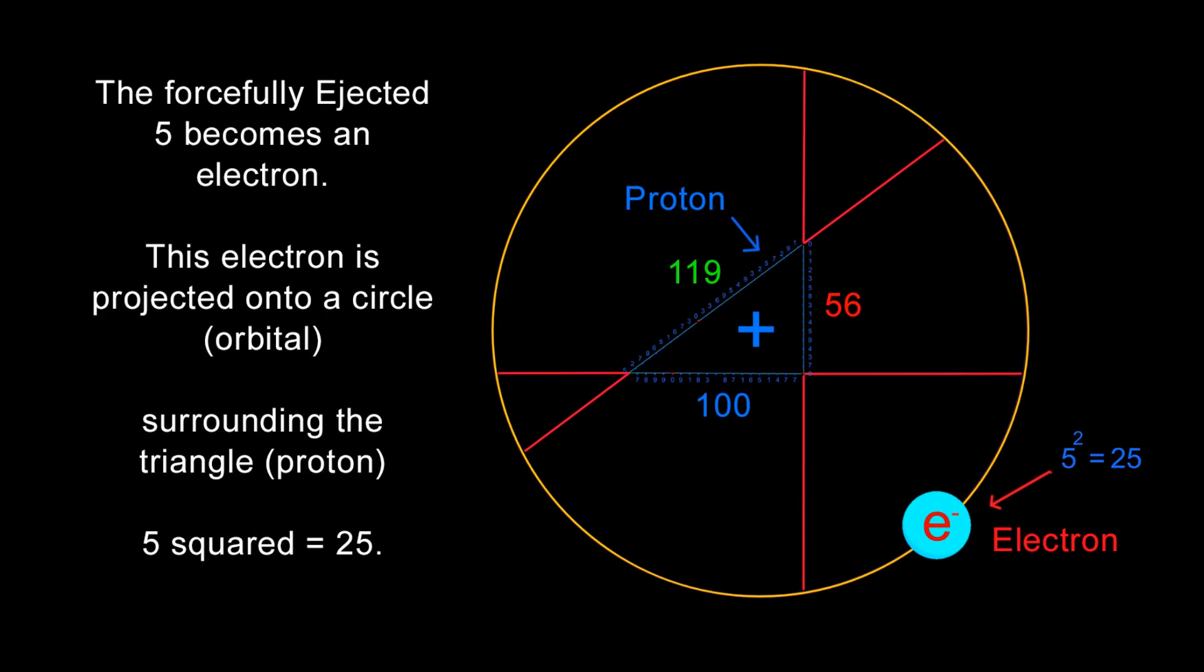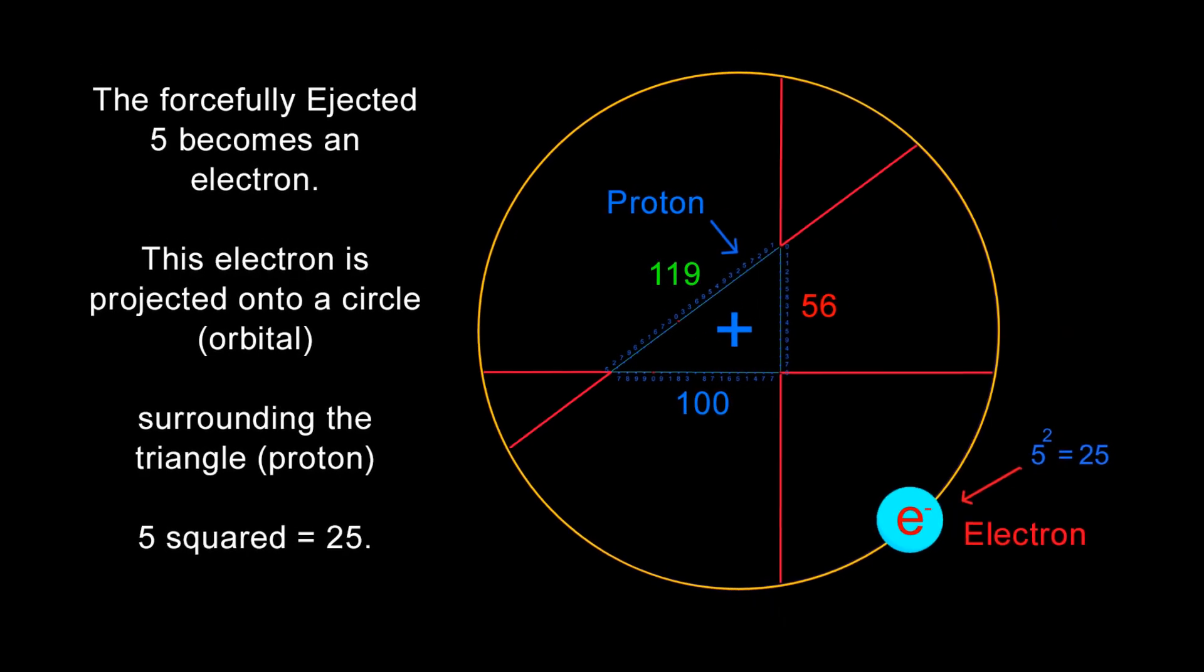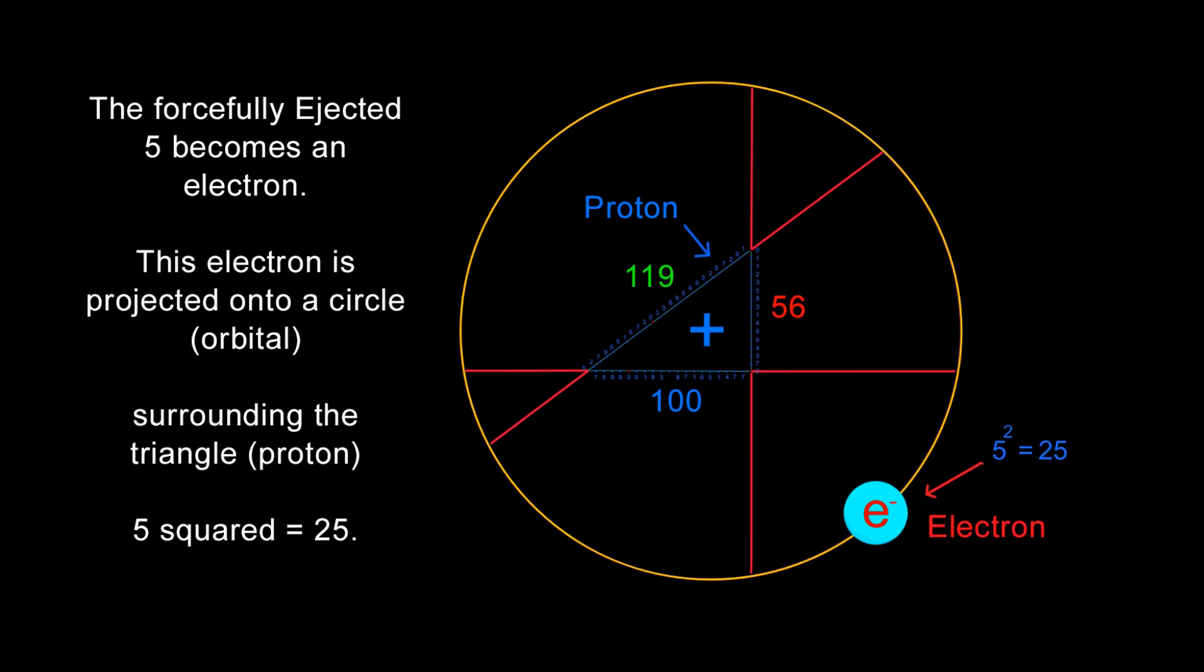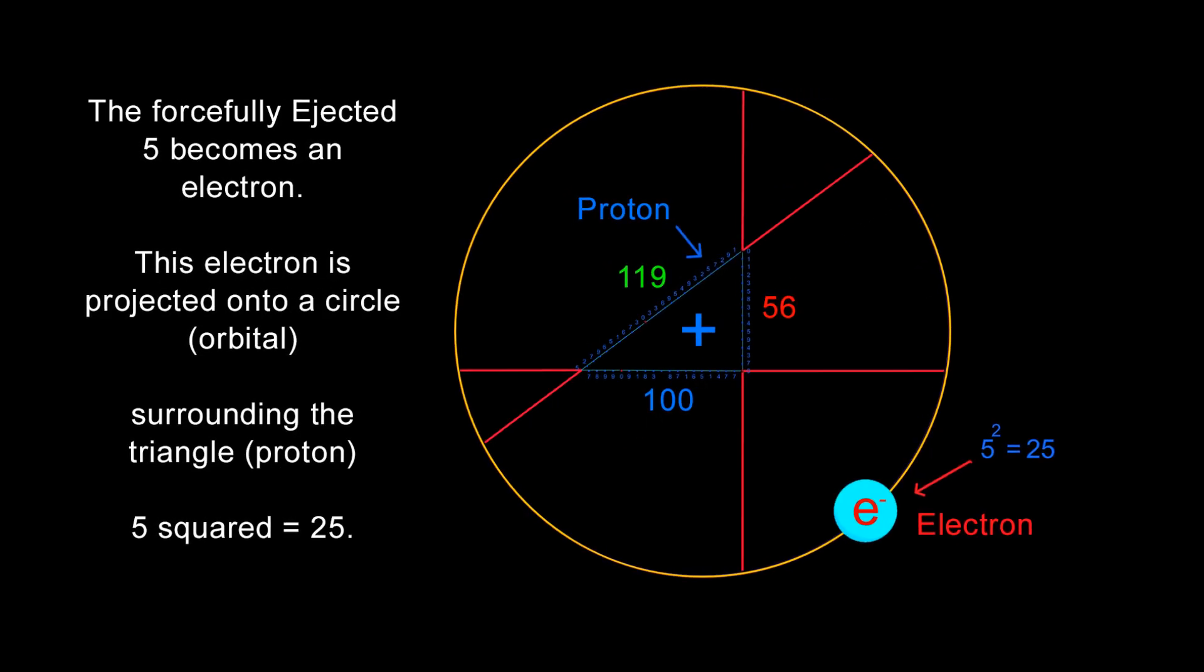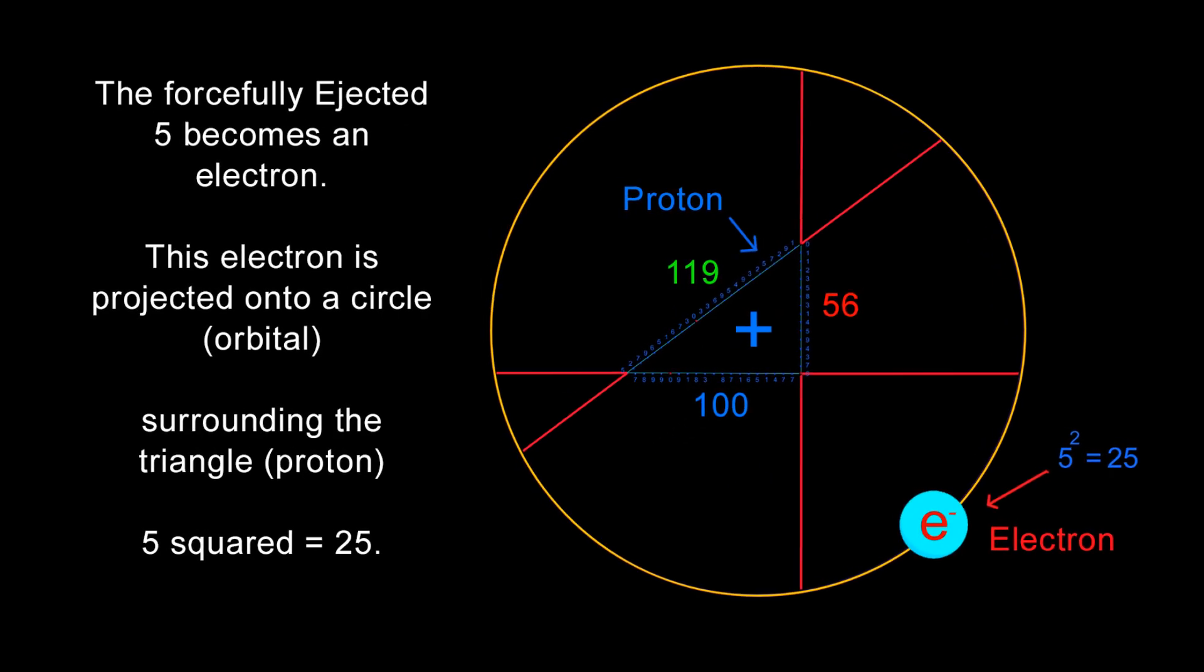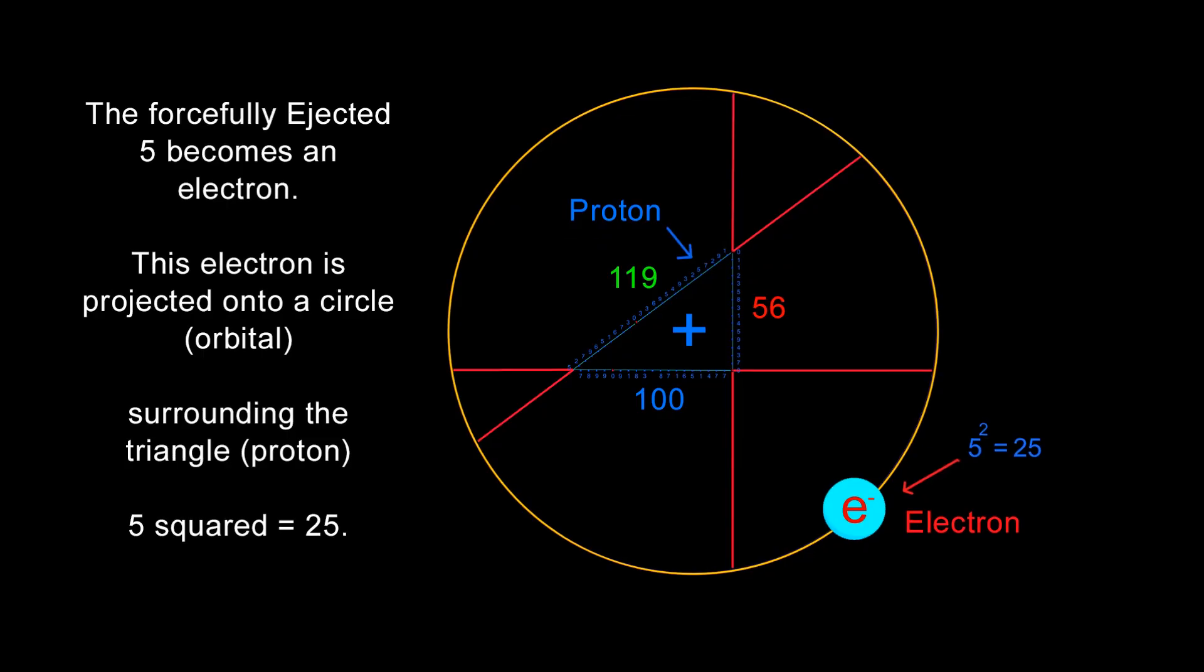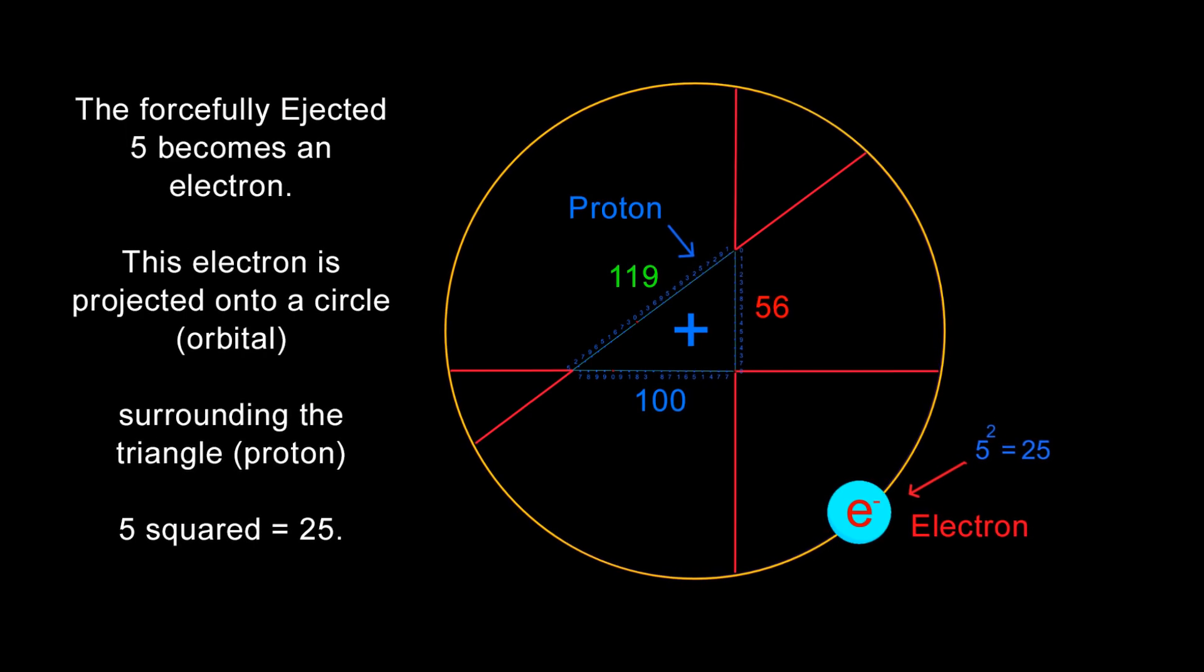This artificial intelligence predicted that one of the ejected fives from my hypotenuse triangle would become the electron exactly as I did. And then it gave this electron a virtual mass of 25 units. It explained this by saying that the five would be ejected with extreme force and would form an orbital around this triangle of energy. The five would therefore be squared, which is 25.